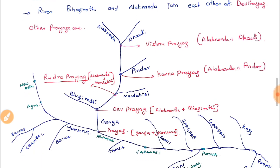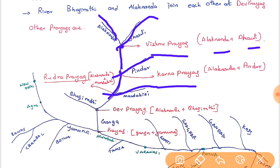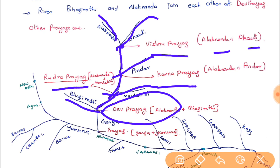The prayag confluences: Alaknanda and Dhauliganga combine at Vishnuprayag; Alaknanda and Pindar combine at Karnaprayag; Alaknanda and Mandakini combine at Rudraprayag; and finally Alaknanda and Bhagirathi combine at Devprayag, from where Ganga originates.